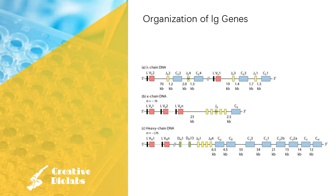Of these, it has been determined that 29 to 33 of the IgVL genes, which fall into 10 sequence groupings, can produce functional proteins. Additionally, 4 to 5 of the IgLJ genes and 4 to 5 of the IgLC genes are thought to be functional. The heavy chain variable region is itself composed of three segments: V (variable), D (diversity), and J (joining), while the light chain variable region has two segments, V and J.